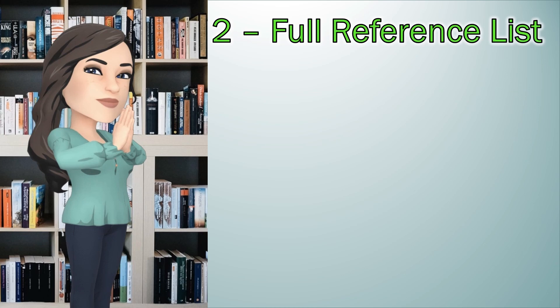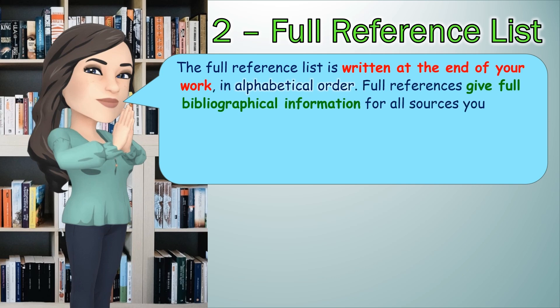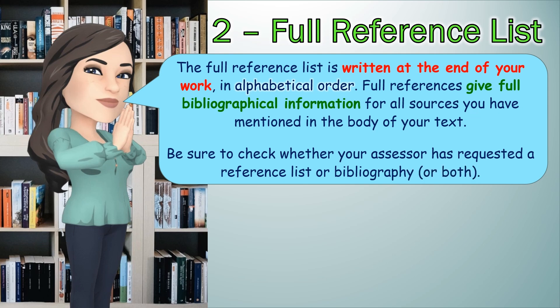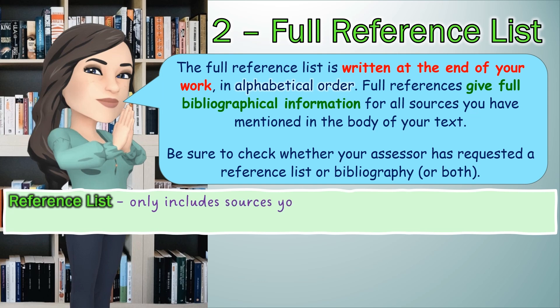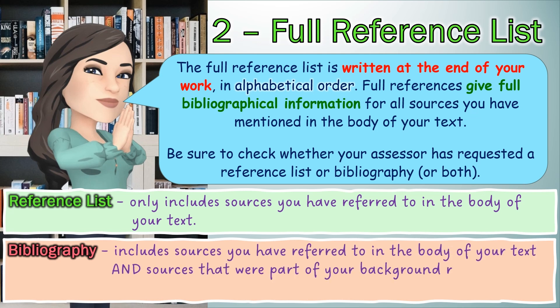Now let's look at the full reference list. The full reference list is written at the end of your work in alphabetical order. It gives full bibliographical information for all sources you have mentioned in the body of your text. Be sure to check whether your assessor has requested a reference list or a bibliography or both. A reference list only includes sources you have referred to in the body of your text, whereas a bibliography includes sources you have referred to in the body of your text and sources that were part of your background reading that you did not use in your assignment.